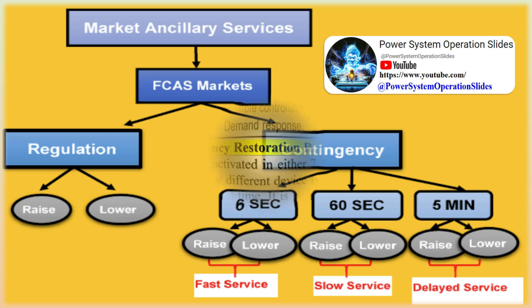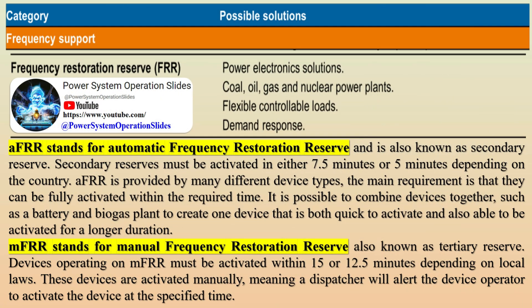Primary reserve power is generated by power plants, usually gas turbines or hydroelectric generators, that are already online and synchronized with the grid but operating below their maximum capacity. When there is a sudden increase in demand or a generator falls offline, primary reserve units can quickly increase their output to stabilize the grid.